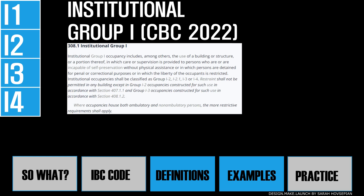Moving on to the next group — institutional group I occupancy — which is the use of a building or structure or portion thereof in which care or supervision is provided to persons who are not capable of self-preservation without physical assistance, or in which persons are detained for penal or correctional purposes, or in which the liberty of the occupants is restricted. There are four subgroups, I1 through I4, subdivided by occupants' abilities, number, ages, health, and time spent in the facility. If they fall outside the I occupancy threshold, they would fall under the R residential occupancy.